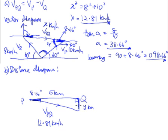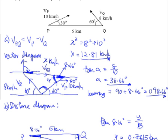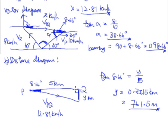To find Y, it is now very easy. Using opposite over adjacent, tangent of 8.66 degrees equals Y over 5. From your calculator, Y = 0.7615 kilometers. Converting to meters, that becomes 761.5 meters. This means that as P and Q are moving, there comes a point where P is directly underneath Q, and at that moment they are 761.5 meters apart.